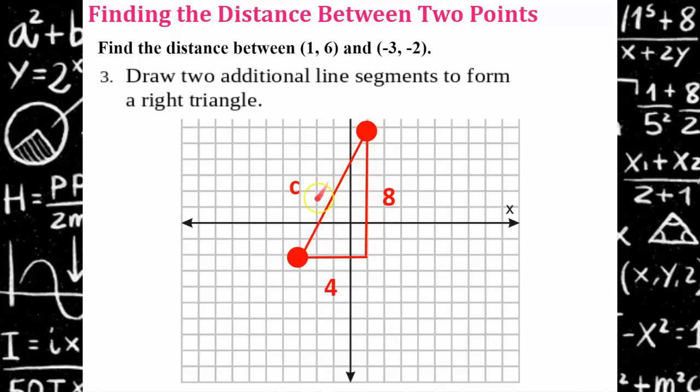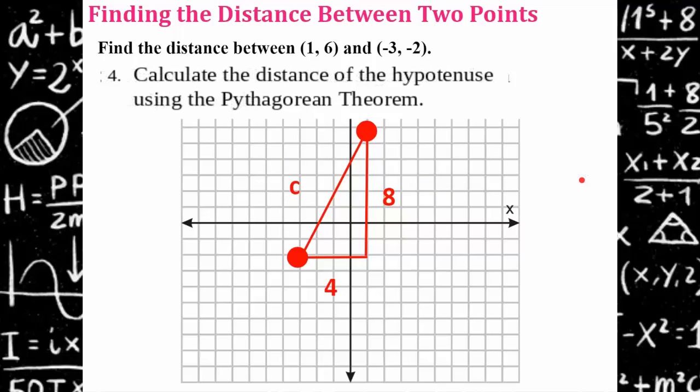This diagonal line that we're trying to find the length of is my hypotenuse c. Step four, we want to calculate the distance of the hypotenuse using the Pythagorean Theorem, which is a² + b² = c².